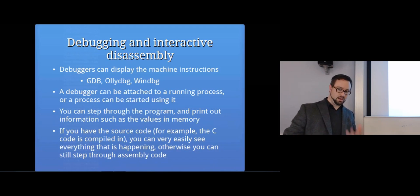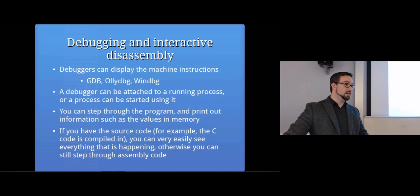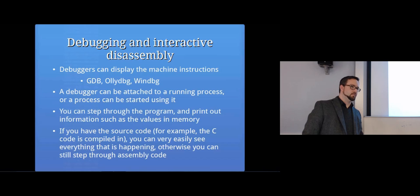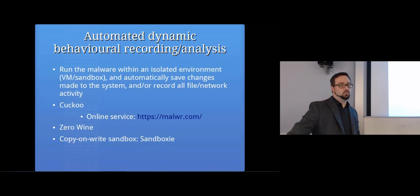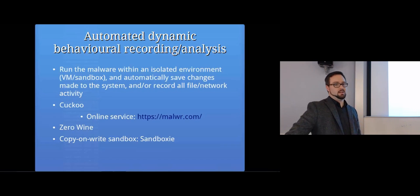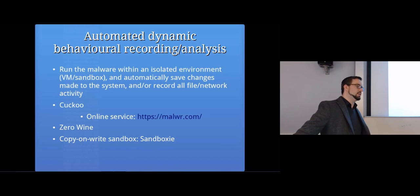You can connect a debugger to a running process and step through the program, look at all the memory values. If you've got source code you can look at variable values. If you don't have source code, you can still step through the assembly - the low-level instructions of what's happening. A high-level way of doing all this is to run the malware in an isolated environment and save the changes made and record all the activity, then compare what files exist now that didn't when the program started.